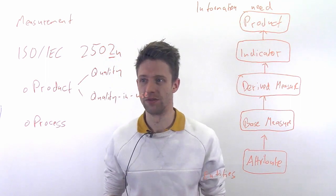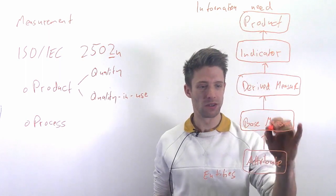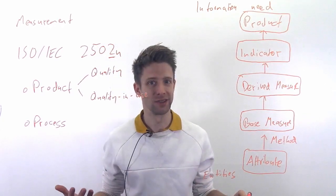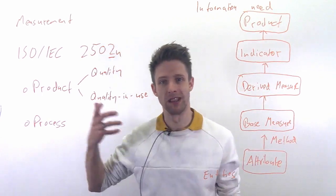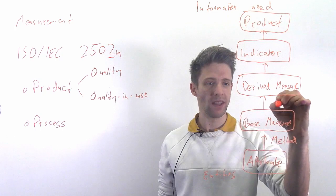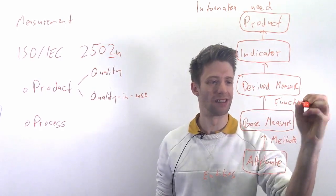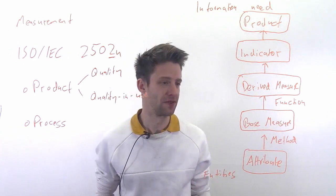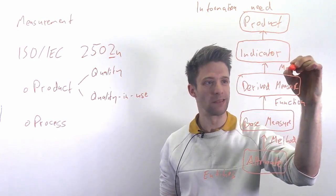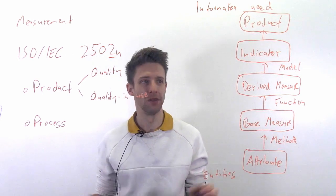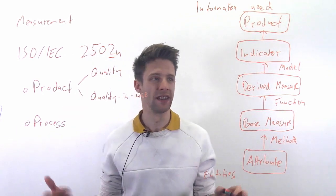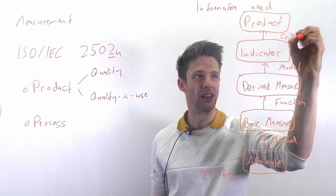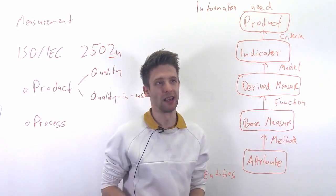For example, we have number of bugs per software size, per lines of code. Then we might have certain thresholds, so we say, well, if we have more than one bug per hundred lines of code, that's bad. If we have more than one bug per five hundred lines of code it's okay, we have more than one bug per a thousand it's good, for example. So it's sort of the traffic light system of rating this. And then usually you end up with some kind of so-called information product, like a dashboard that actually visualizes this.